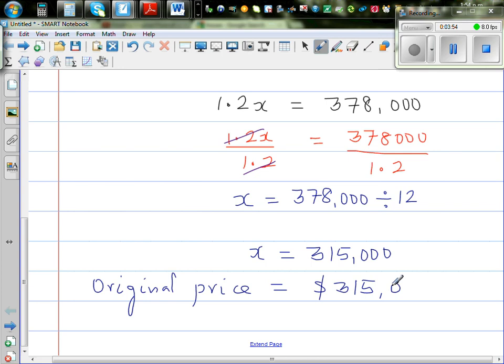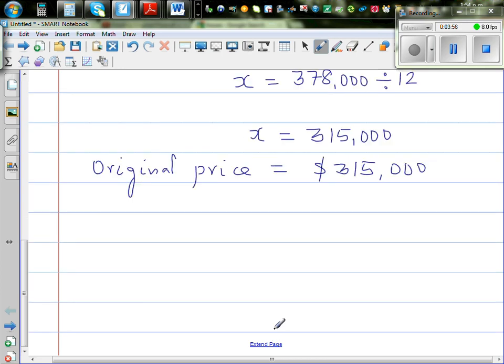It's always good practice to check your answer, whether this answer is making sense. Now let's check it. This is the most crucial part, I believe. So the original price is 315,000. We wrote this equation like this.